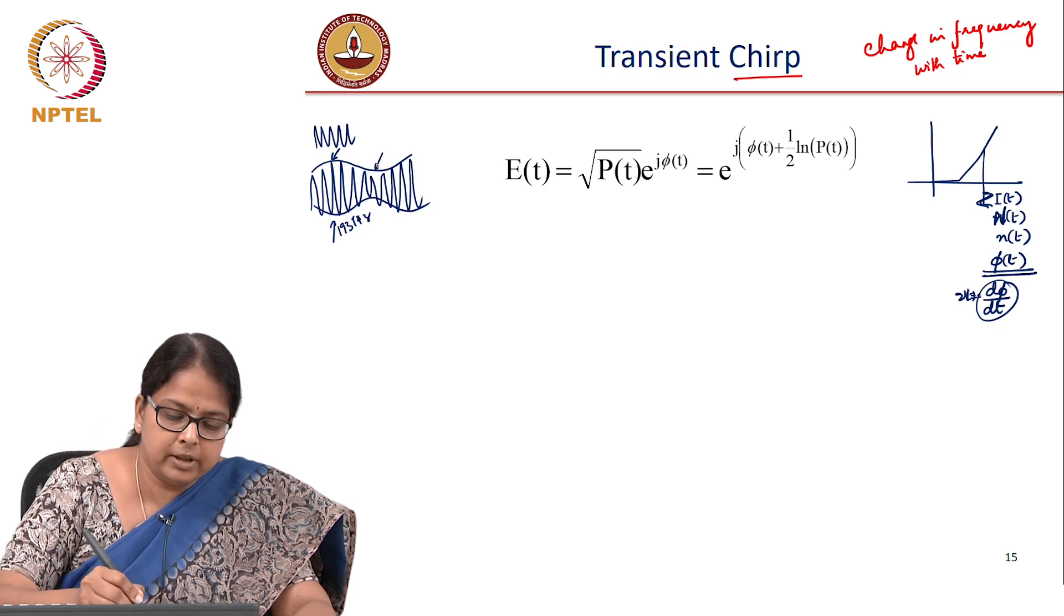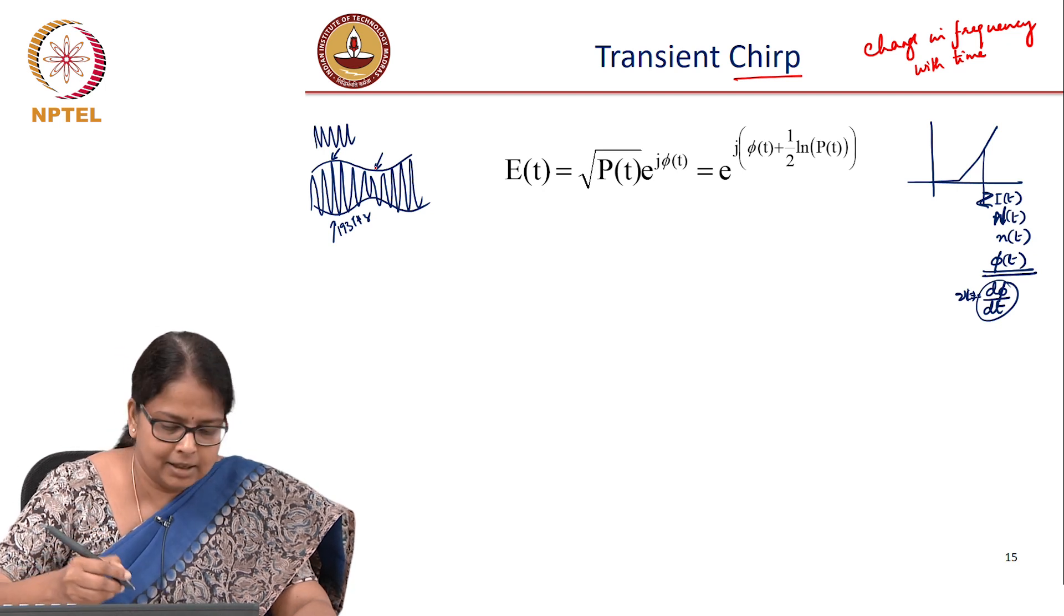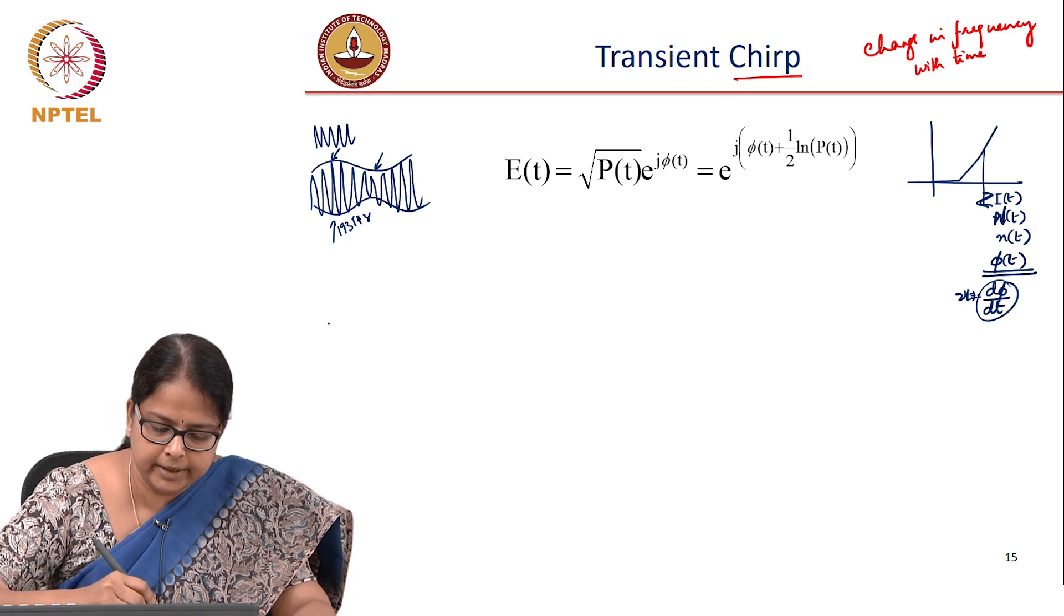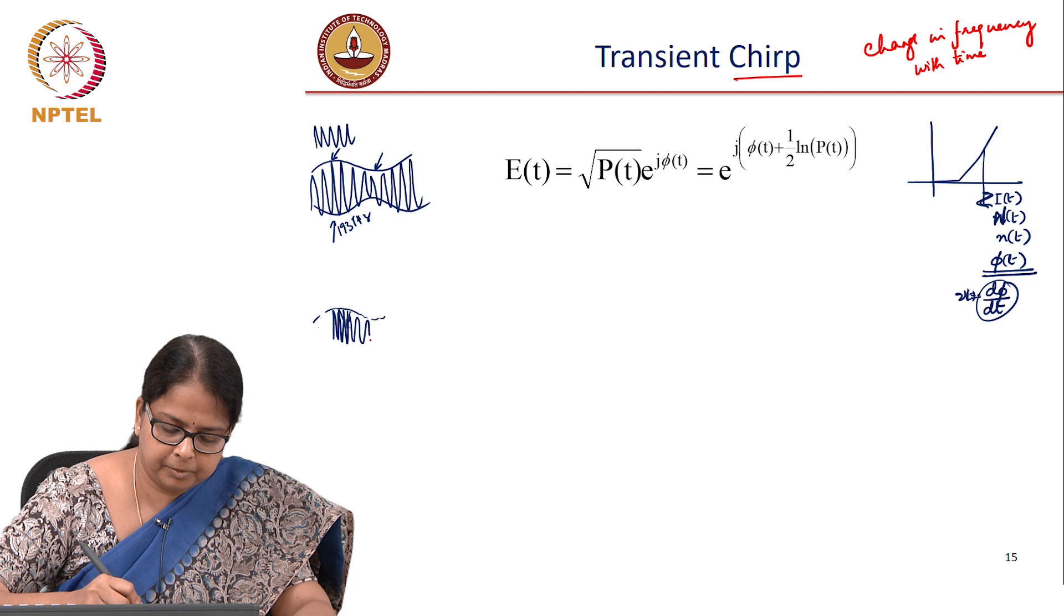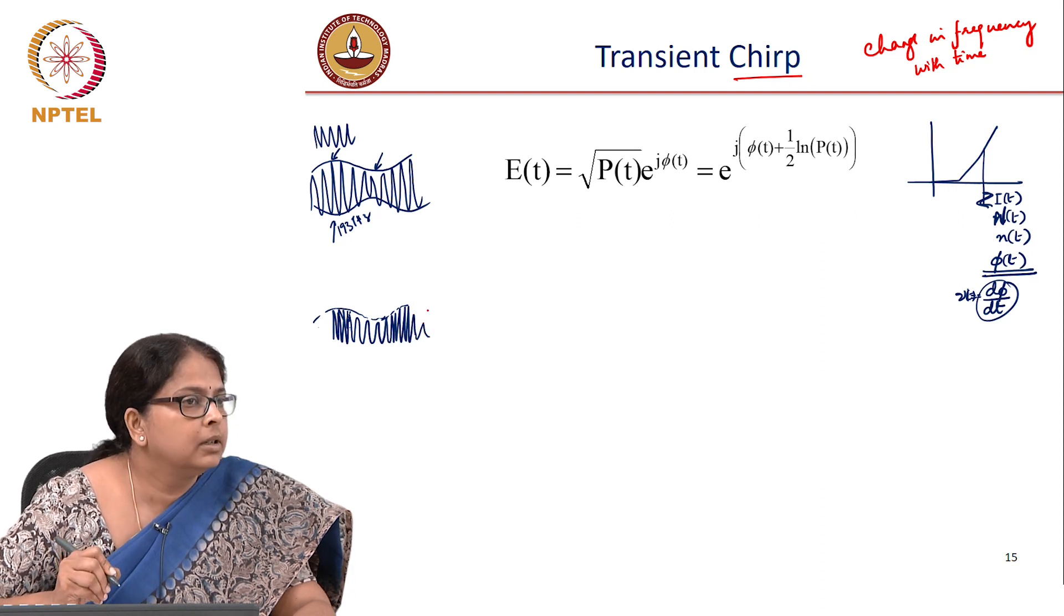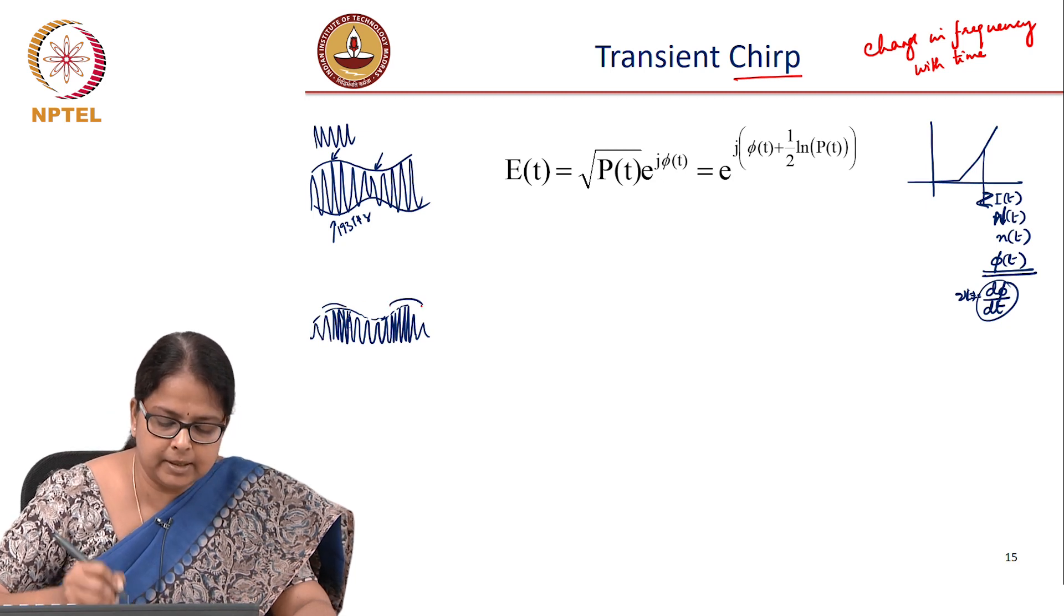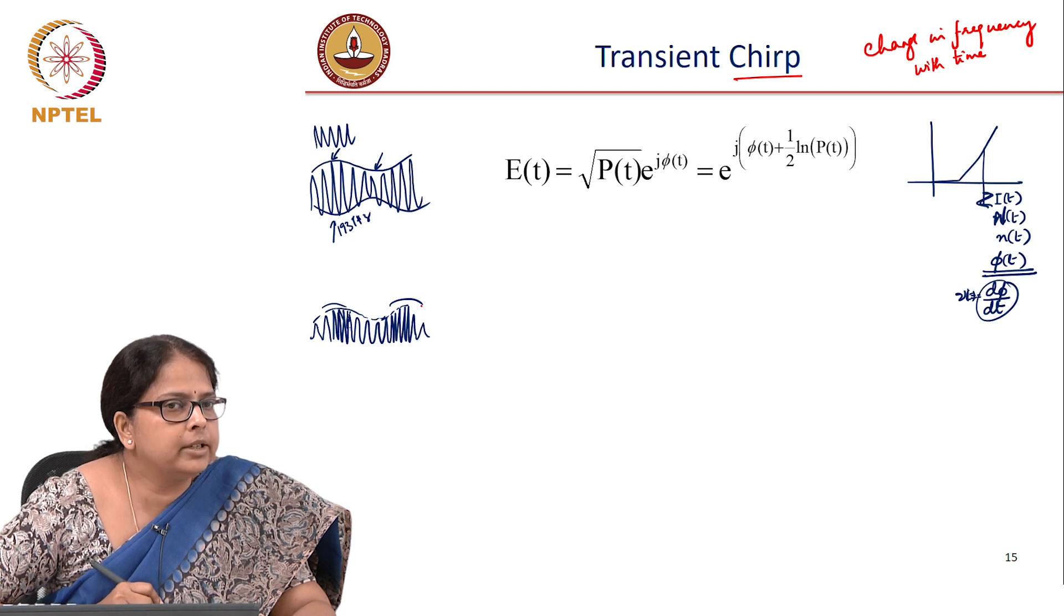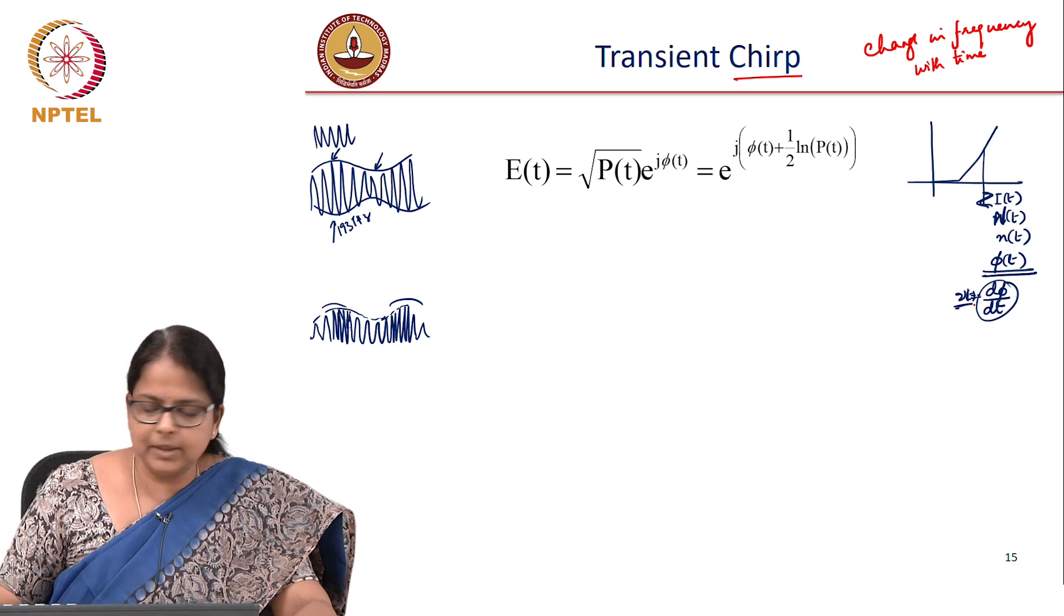When the current is low, the refractive index is low, the instantaneous frequency is low. So if I exaggerate this effect, this modulation actually must look like this. This is the envelope and so on. Depending on the current that I have, my instantaneous frequency is changing. What does this look like to you? Does not it look like FM modulation? That is exactly what is happening, frequency is changing with time.